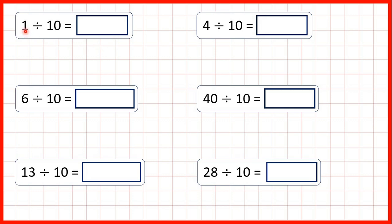First, we have 1 divided by 10. This looks strange because we're used to seeing division questions written with the larger number as the dividend and the smaller number as the divisor. But division doesn't have to be that way round. We can do 1 divided by 10. If we write out the number 1 with a decimal point on the end, we can copy down the decimal point. When we divide, as long as the number we're dividing by is larger than 1, the number is going to get smaller, so the digits move to a smaller place value. We're dividing by 10, which has one zero, so the digits move one square to the right.